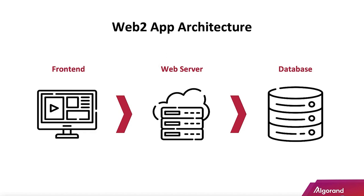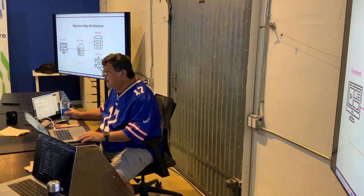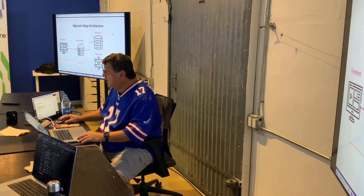Here we have a Web2 typical app architecture where you have the front end, the web server, and the database. We're all familiar with this — client-server programming, separation of concerns, layered architecture. And now with DAPT, the Algorand DAPT architecture, we've got a few things added: the Algorand SDK interacting with your web server, and the Algorand blockchain itself along with the Algorand Virtual Machine where smart contracts execute. It makes sense to be lean and mean because you don't want to be too bulky in terms of execution speed — that's the benefit of assembly language.